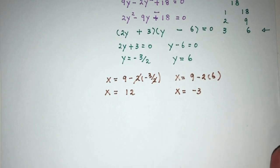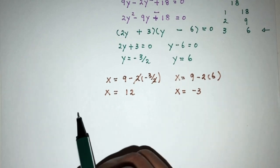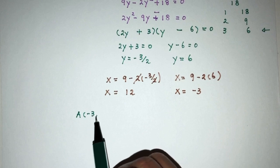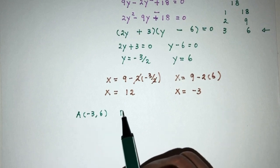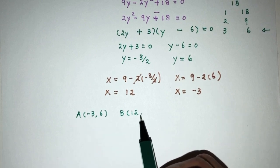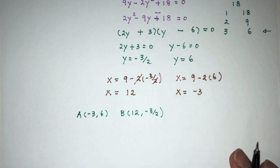Now, as you can see we have two points. So, this will be my point A will be minus 3, 6 and my point B will be 12 and minus 3 over 2.